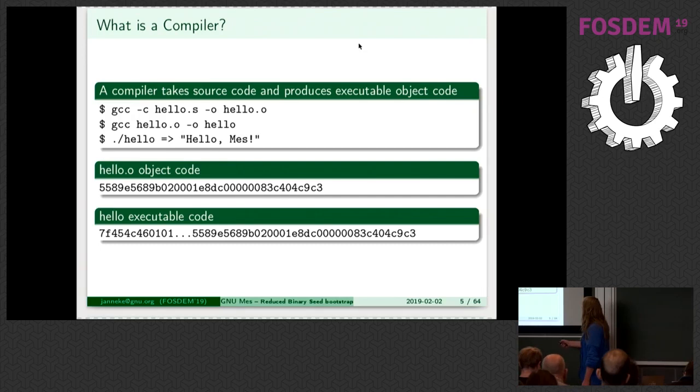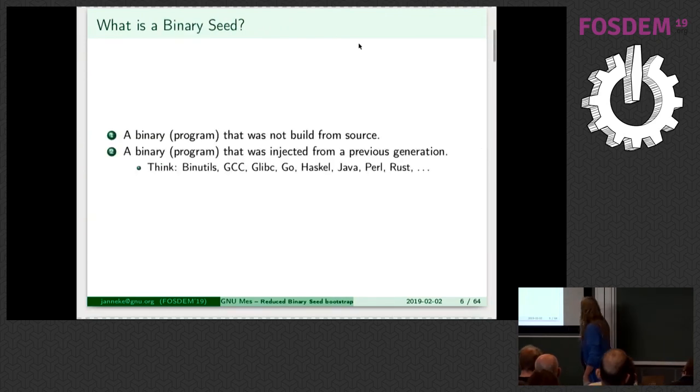You need some stuff at the front to be able to execute it as a program. Obviously, you don't want to type in these codes when you want to have the computer greet you, say hello world. So we've got compiler, we've got assembler, we've got compiler. So what's the binary seed? A binary is a program that was not built from source, but you run it when you want to run it.